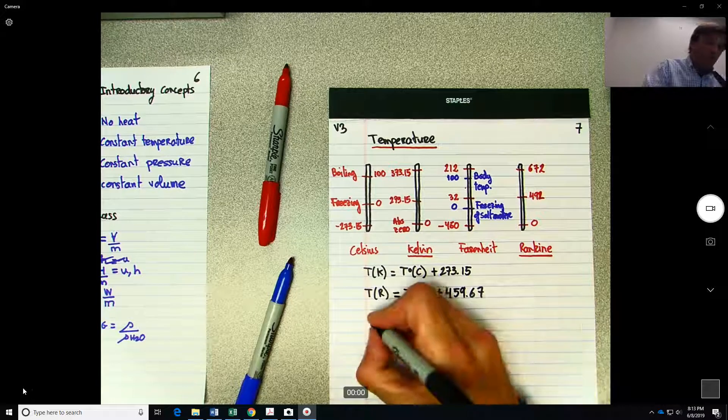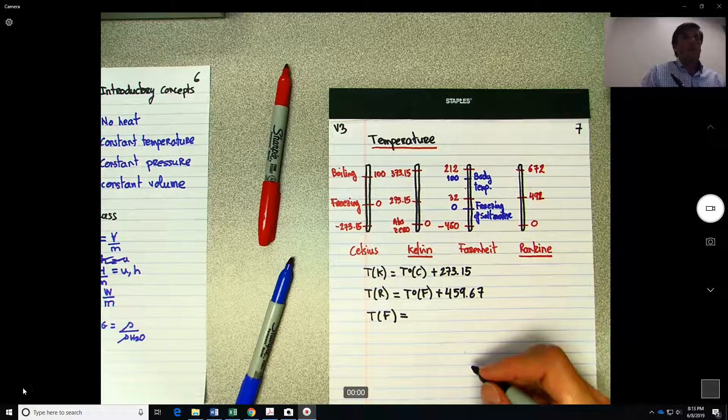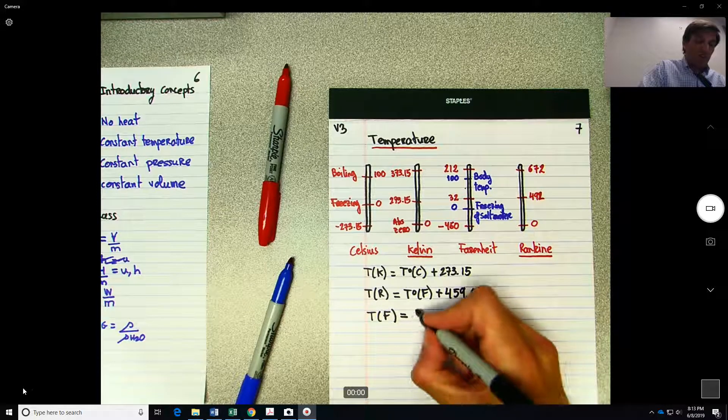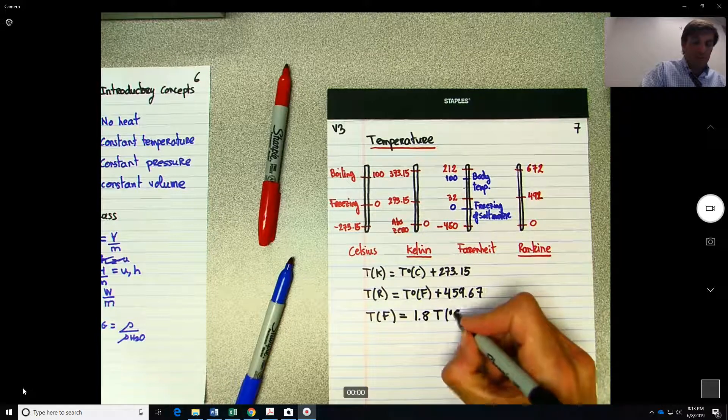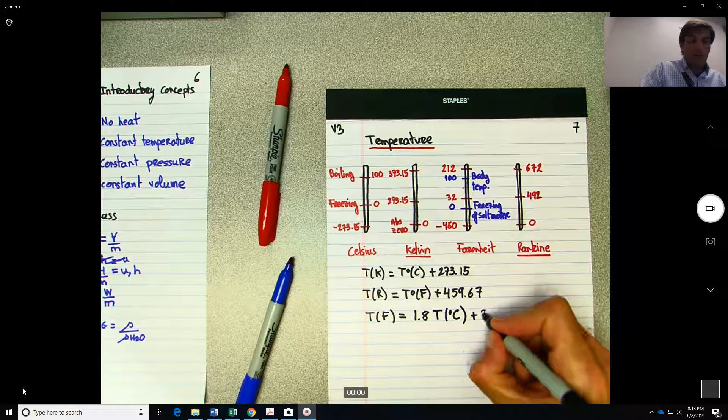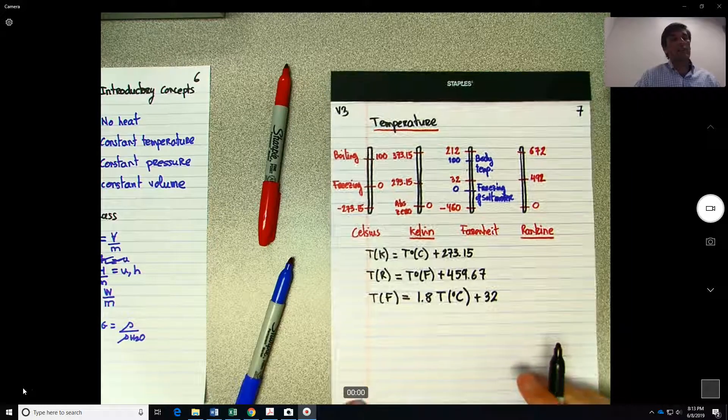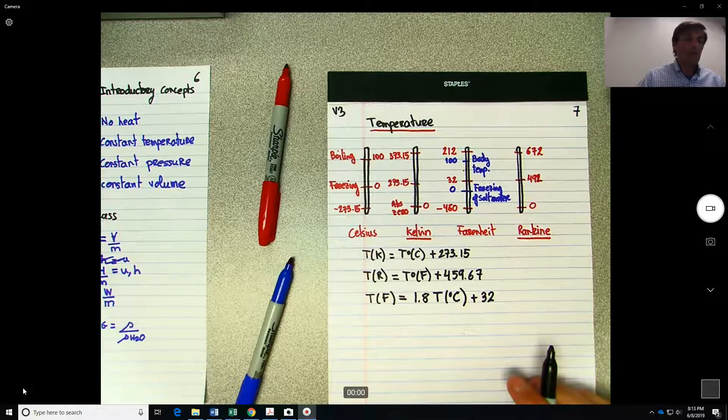But then if you want to go, let's say, from Fahrenheit to Celsius, you do 1.8 times temperature in Celsius plus 32. So that one is a little bit more complicated.